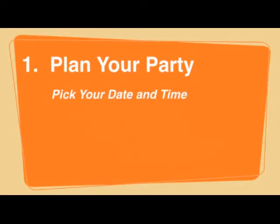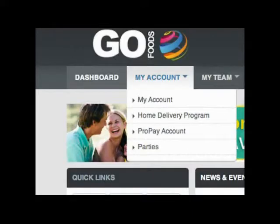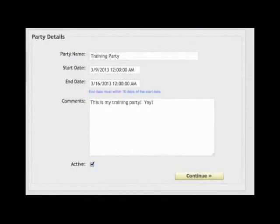Next, pick the date and time of your Go Party and schedule it 7 to 10 days out. When picking your date, be aware of any holidays, local school events, or community events that may cause conflicts for many of the people that you are inviting. After you've decided on a date and time, go to your Go Foods back office and schedule your party by going to My Account, Create a New Party, and then fill out the details and hit Continue.